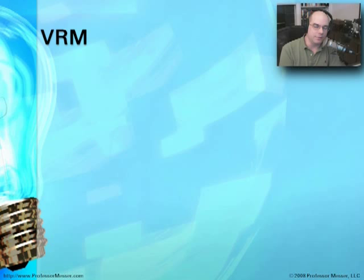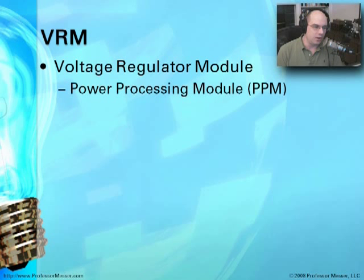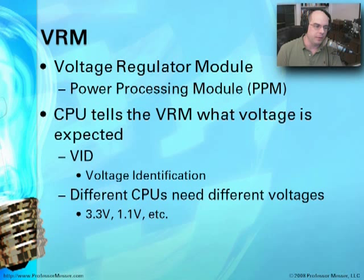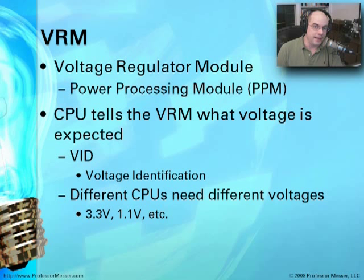Voltage is a very important piece of working with CPUs. Different CPUs run at different voltages, and because of CPU throttling, my laptop CPU runs at different voltages all the time. When it needs more power, it requests more voltage through a voltage regulator module — also called a power processing module. That module ensures the proper voltage is provided to the CPU, based on a VID (voltage identification) signal the CPU sends to request a specific voltage level.